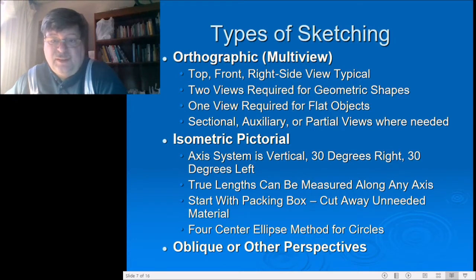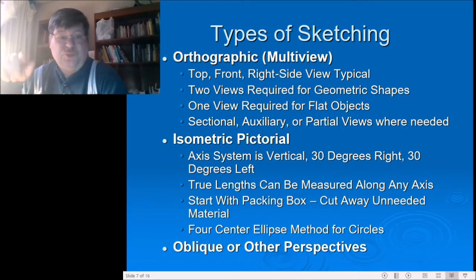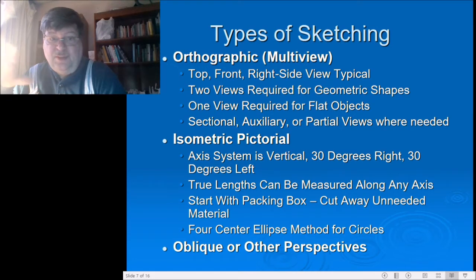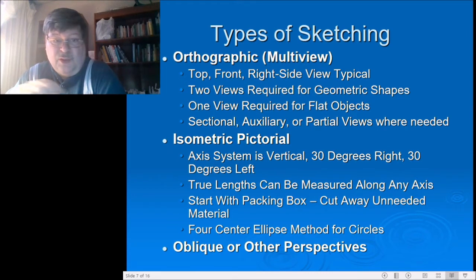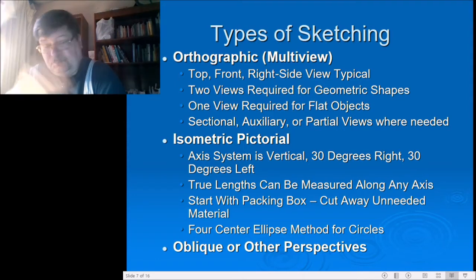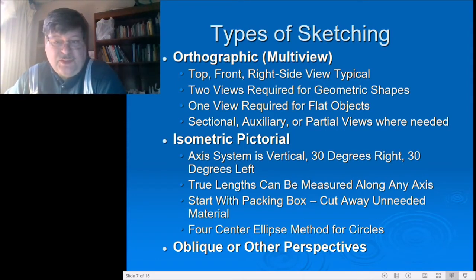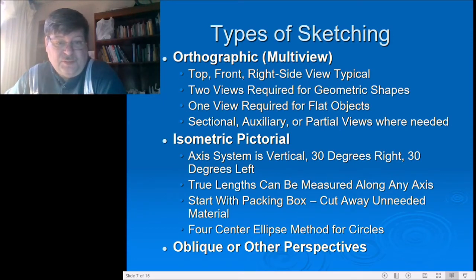You may need only one view for a flat object. If you have a flat piece of sheet metal cut to some shape and need to dimension it, you just have the face of that sheet metal — one view is fine with a note saying how thick the material is, and you're done. You may also need sectional views, auxiliary views, or partial views to help convey information; we'll get to those later on.